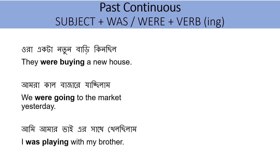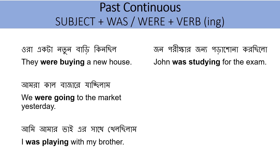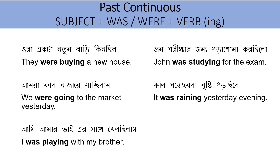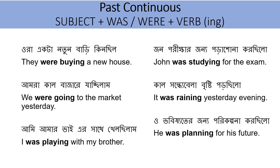In each sentence, the subject comes first — they, we, I — followed by 'was' or 'were', and then the verb in its -ing form: buying, going, playing. John পরীক্ষার জন্য পড়াশোনা করছিল — John was studying for the exam. কাল সন্ধ্যায় ভারী বৃষ্টি পড়ছিল — It was raining yesterday evening. ও ভবিষ্যতের জন্য পরিকল্পনা করছিল — He was planning for his future.